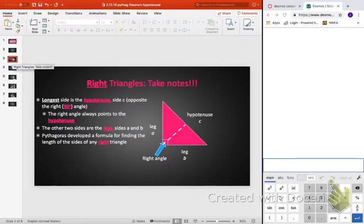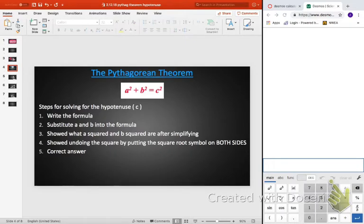Pythagoras developed a formula for finding the length of any of the sides of any right triangle. And the formula is the Pythagorean Theorem. A squared plus B squared equals C squared. Here are all the steps for solving the Pythagorean Theorem that I want you to write down. These are going to be really useful for the next few days in class. So, step one is write the formula. Step two is substitute A and B into the formula. Step three is show what A squared and B squared are after simplifying. Show undoing the squared by putting the square root symbol on both sides and then getting the correct answer. All of that might not make sense right now, but we're going to do a few examples. So, keep those notes with you.